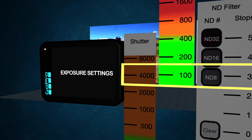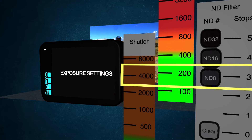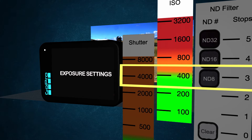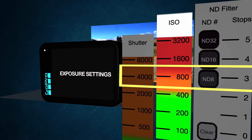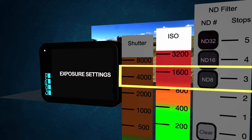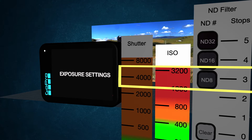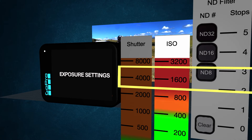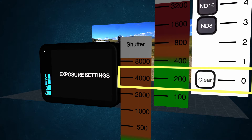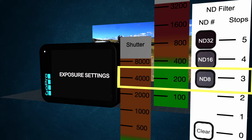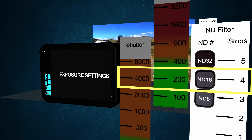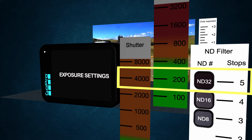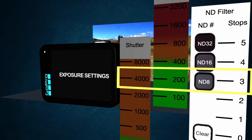Moving on to ISO: generally lower is better. ISO 100 gives the cleanest image with the least noise. As you increase ISO, you introduce noise — two stops up to ISO 400 is fine, you'll hardly notice anything. ISO 800 is the upper limit for me; above that the image becomes too noisy and degrades rapidly, so 800 is in orange and above that is in red. For the ND scale, the four options I use are: no ND filter, ND8 (three stops), ND16 (four stops), and ND32 (five stops). I'd normally use an ND8 or ND16.